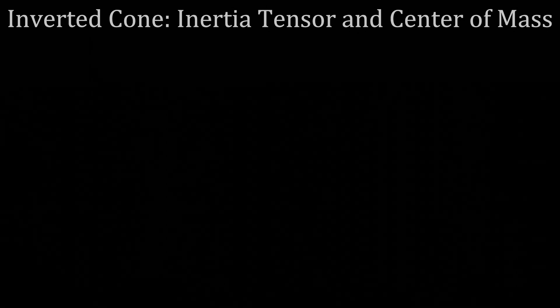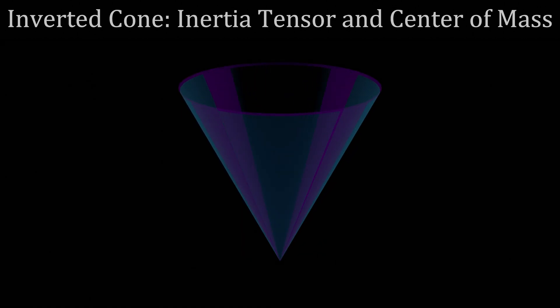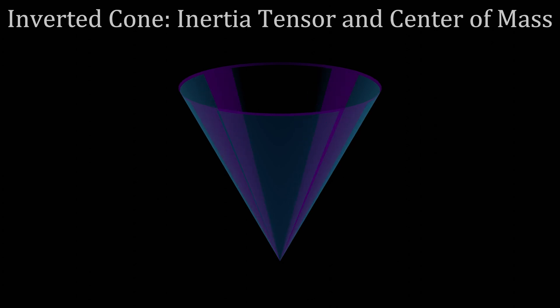The problem is a basic one for a graduate classical mechanics course. A cone spinning on its tip. We want to find two things: the center of mass, mainly just for fun and to ease into integration, and then the full inertia tensor for the cone.